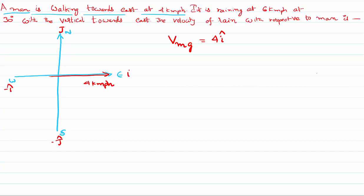That's the first part of the problem — a man is walking on the road with a speed of 4 kmph towards east, represented as 4 i-cap. Now let's continue. It is given that there is rain at 6 kmph velocity at 30 degrees with the vertical, towards the east.